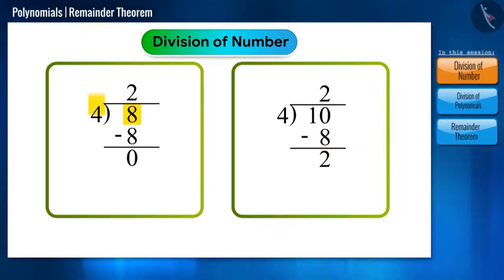For example, if we divide 8 by 4, we get the remainder as zero, whereas if 10 is divided by 4, the remainder is 2.